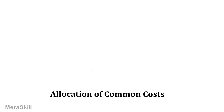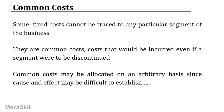Next, let us look at allocation of common costs. There could be certain common costs we do not know how to allocate. You saw the fixed costs in the previous example. How do you allocate the common costs which cannot be traced to any particular segment? These are common costs — they would have been incurred even if that particular segment is discontinued.